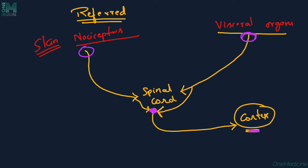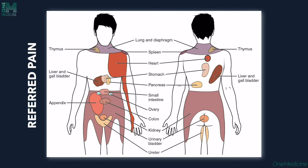Visceral organs don't provide a direct painful response since they are internal. So the visceral organ has a superficial representation of pain. For example, the liver and gallbladder have referred pain on the back. Appendix pain is referred to the right iliac fossa. Kidneys refer pain to the loin and lumbar region. Many different internal structures have different superficial pain representations.